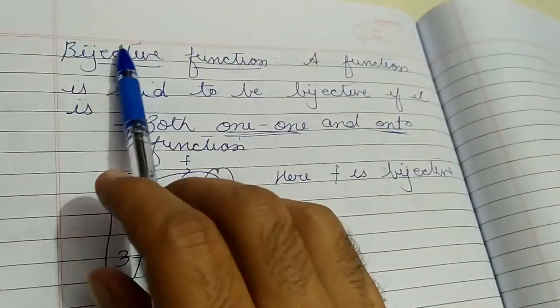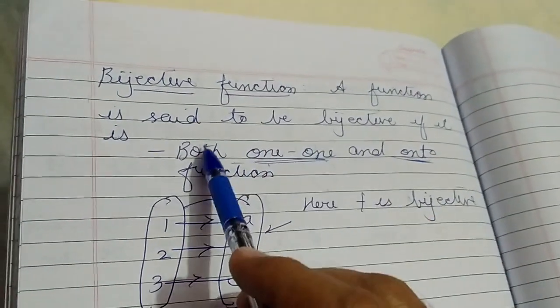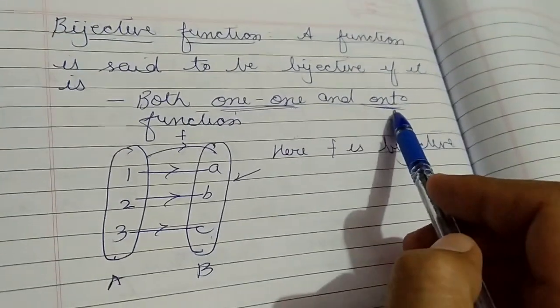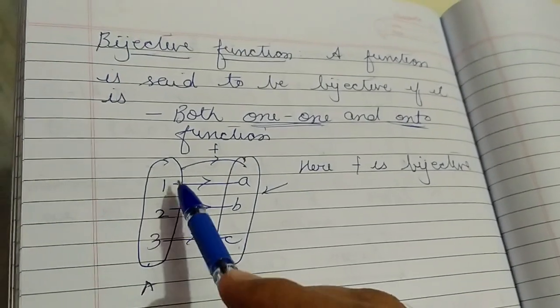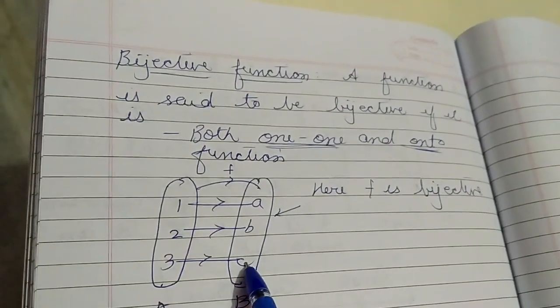Now move to the next type of function, which is a bijective function. A function is said to be bijective if it is both one-one and onto function. In this mapping, each element is associated with a single element of the second set.